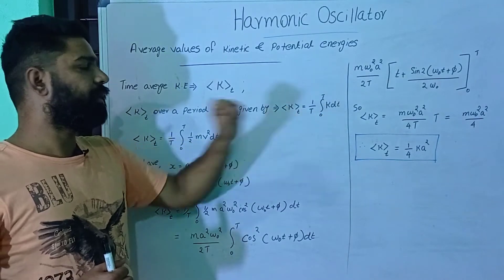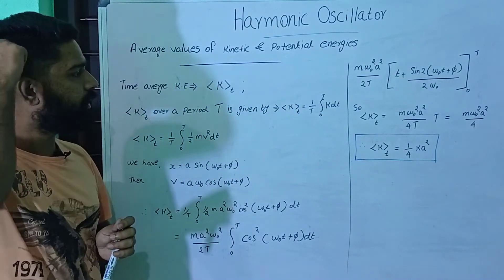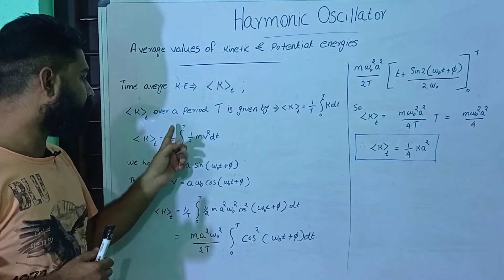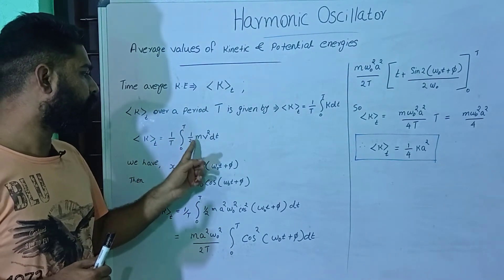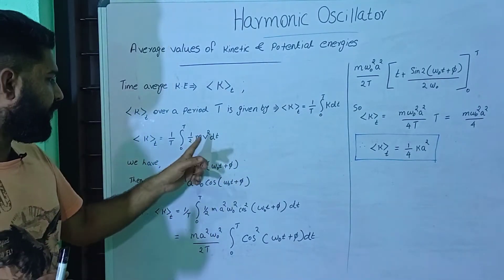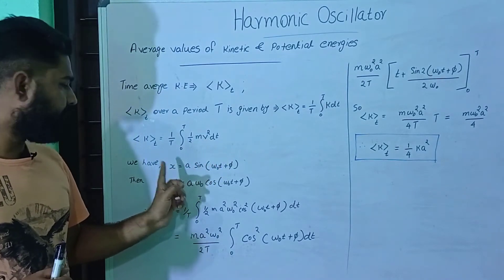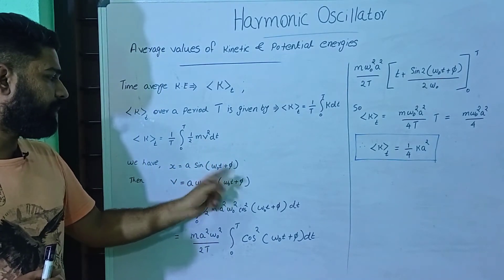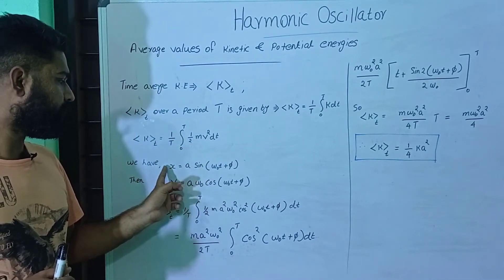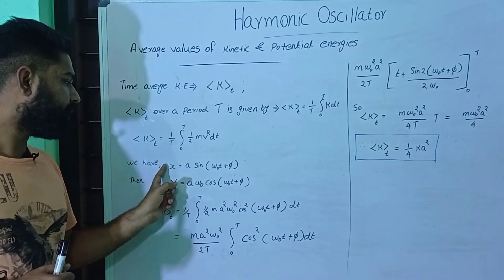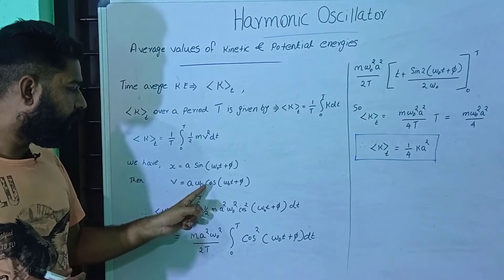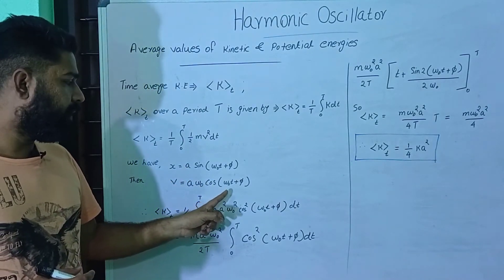If we consider K = ½mv², the kinetic energy is ½mv². So average kinetic energy is equal to (1/T) ∫₀ᵀ ½mv² dt. We consider x = a sin(ωt + φ), so dx/dt is velocity — the rate of change of displacement. Thus v = aω cos(ωt + φ).